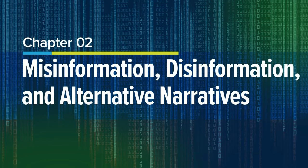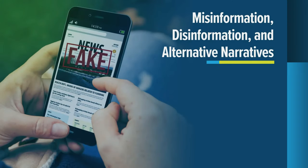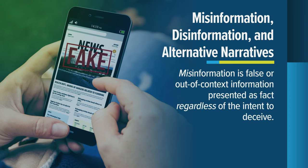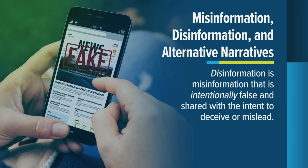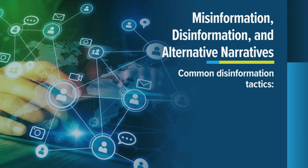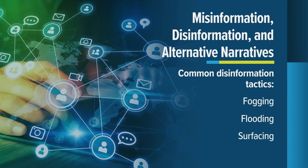Chapter 2: Misinformation, Disinformation, and Alternative Narratives. Both misinformation and disinformation involve sharing false or debunked information. Misinformation is false or out-of-context information that is presented as fact, regardless of the intent to deceive. Disinformation is misinformation that is intentionally false and shared with the intent to deceive or mislead. Three common tactics for disinformation are fogging — the construction and communication of multiple explanations; flooding — the aggressive repetition of disinformation; and surfacing — the creation of plausible alternate explanations.